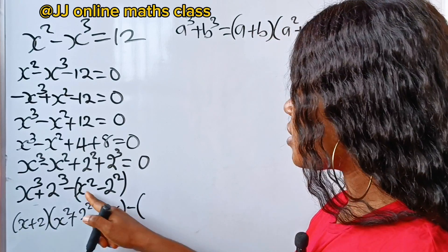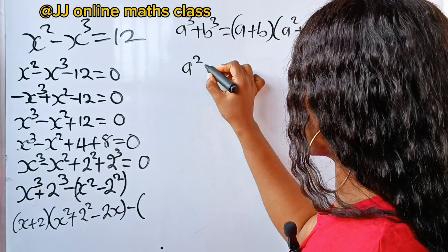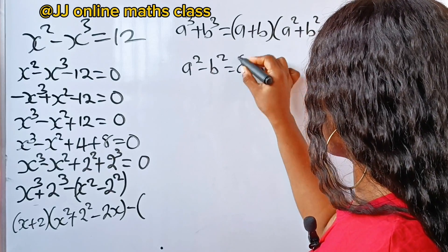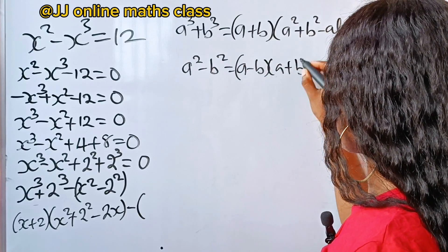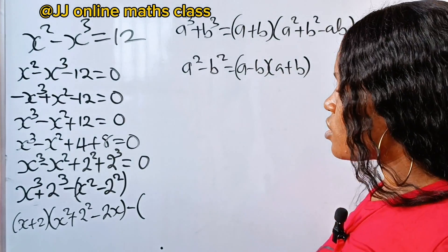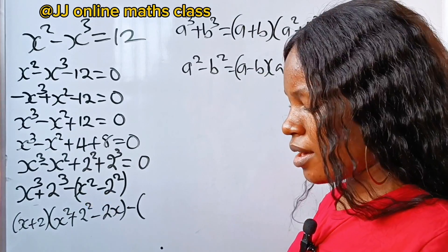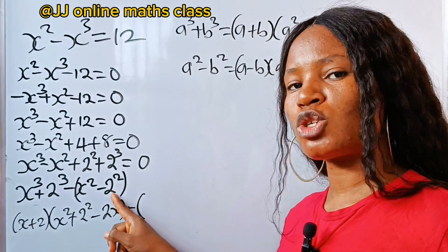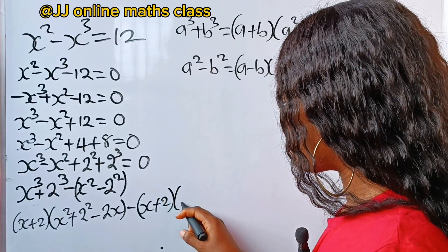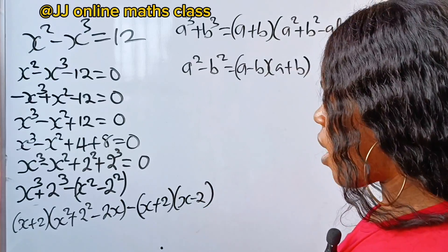Then minus — this is a difference of two squares. The difference of two squares states that a squared minus b squared is equal to a minus b multiplied by a plus b, or a plus b multiplied by a minus b. So we are going to express this in that form, where our a is x and our b is 2, giving us x plus 2 multiplied by x minus 2.